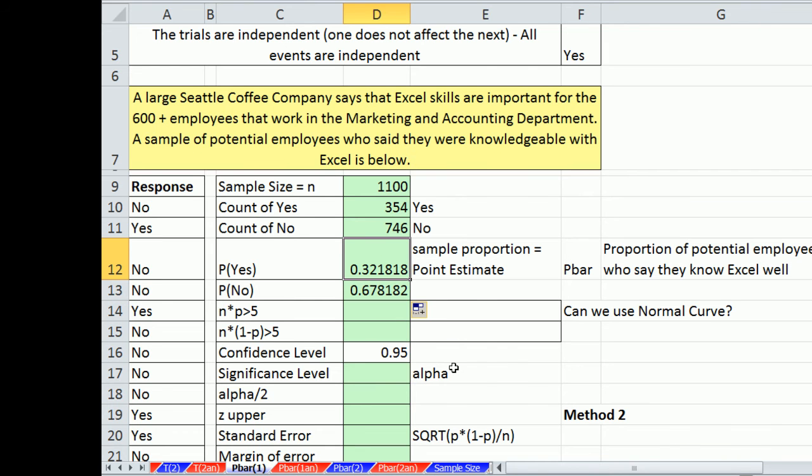So 32% of these people have the potential of getting an interview or whatever it is this company is going to do with this. That's the sample proportion. It's our point estimate. It's the best estimate we have of our population parameter. We'll call this pbar, and this is a proportion of potential employees who say they know Excel well. Now let's test to see if we can use the normal distribution.